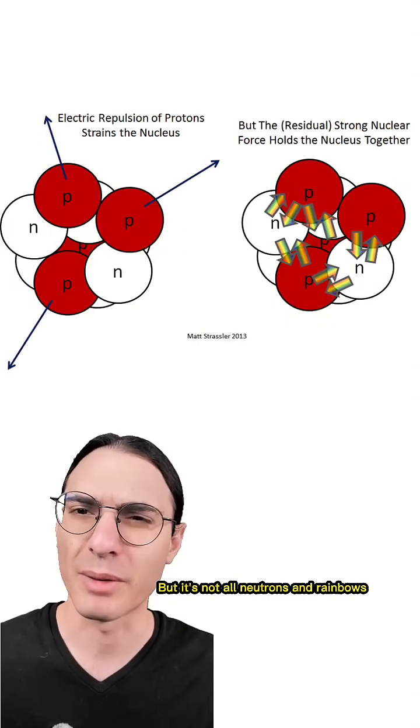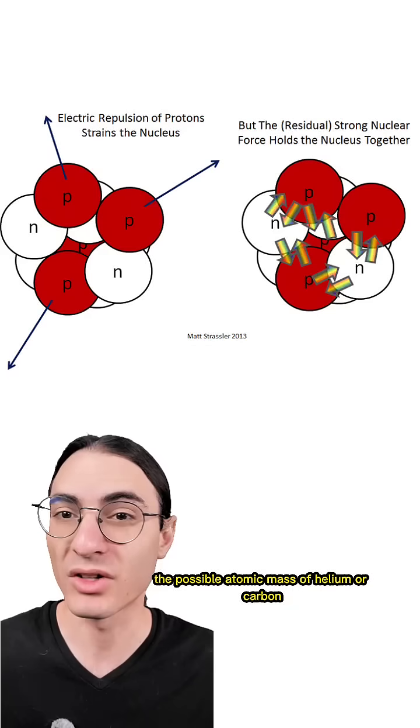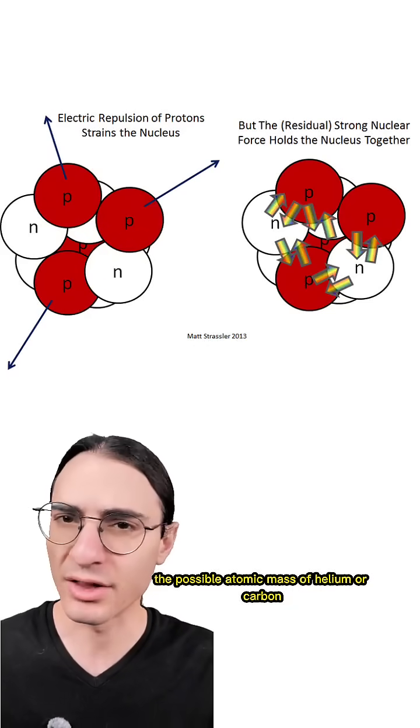But it's not all neutrons and rainbows. You can't add as many neutrons as you want. There's an upper limit to, for example, the possible atomic mass of helium or carbon. And the reason is subtle.